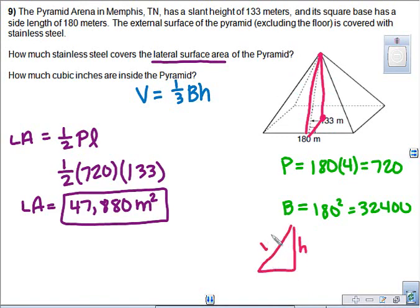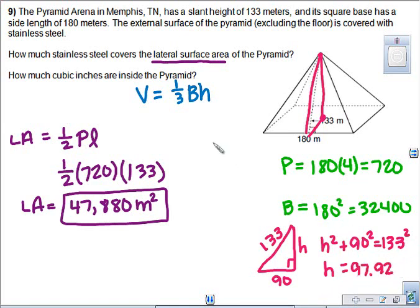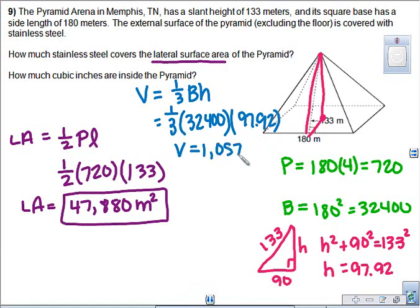So we have the height, the slant height, and halfway across the base. This is not 180. A common mistake is to put 180 here. 180 is all the way across, this is halfway, so this would be 90. So you have to use Pythagorean theorem here to solve for H. So your A and B are the legs. 133 is the hypotenuse. When you solve this out and subtract it over and then take the square root, you get 97.92 approximately. So when I go back to my formula, I found area of the base to be 32,400, and I found height to be 97.92. So my volume comes out to 1,057,536, and this is in cubic meters because we're talking about volume.